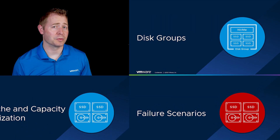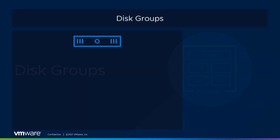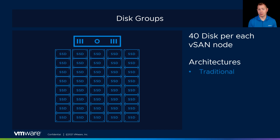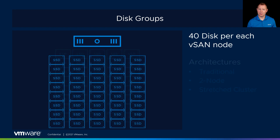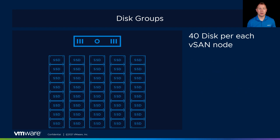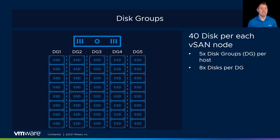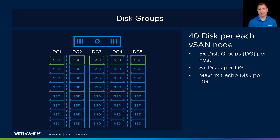We're going to start off by talking about our disk groups. vSAN supports a maximum of 40 disks per each ESXi host, whether it's our traditional or standard model, our two-node configuration, or our stretch cluster. We use something we call disk groups to organize all 40 of those disks. We can have a maximum of five disk groups per each ESXi host, which means a maximum of eight disks per each disk group. Going back to that cache-capacity split, we have a maximum of one cache disk per disk group and a maximum of seven capacity disks per disk group.